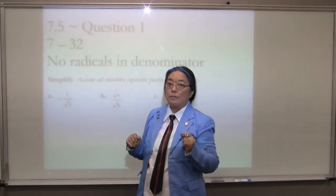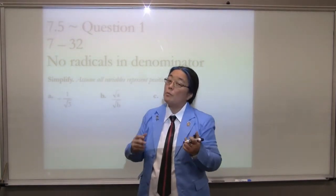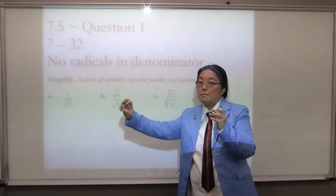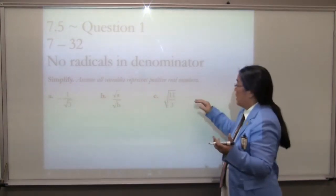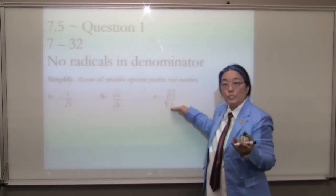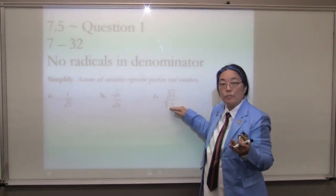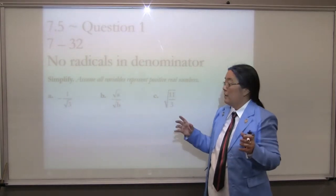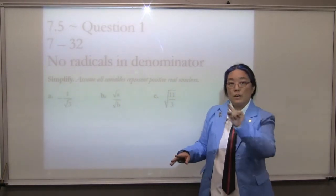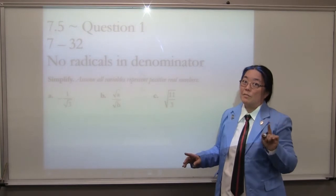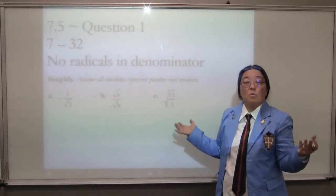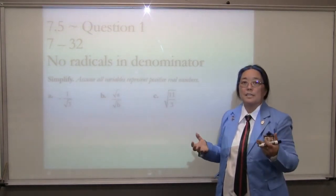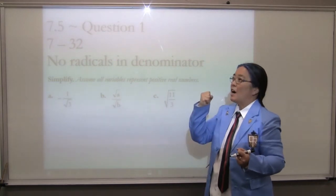There is something called simplified radical form, and we've been having you do that this entire time. It says that if you can pull something out, you pull something out. If you have something that has a fraction inside of a radical, you split that apart. And if you have a radical in the denominator, you're going to do something to get rid of that. We've never had to do anything to get rid of that because it's always come out nicely in the past. Until now.